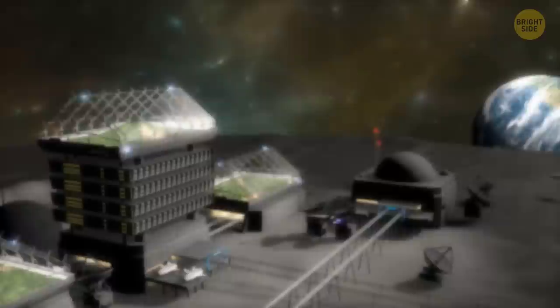Nah, it's trapped in the layer of rock and dust covering the surface of the moon. This layer is called the regolith, and it contains up to 45% oxygen.